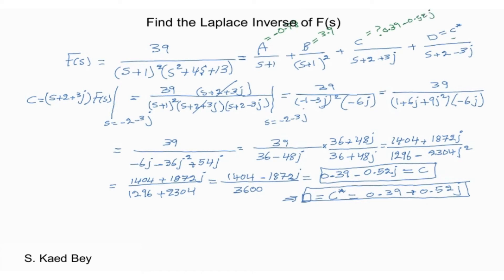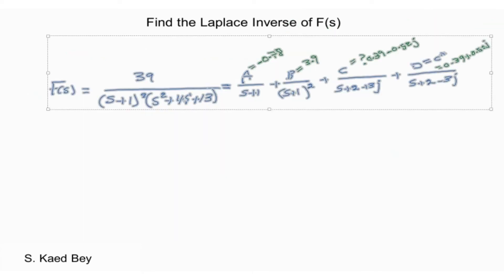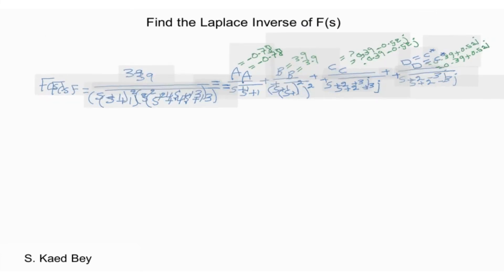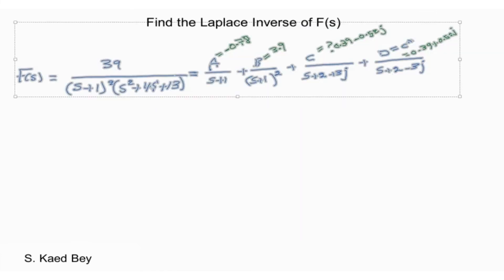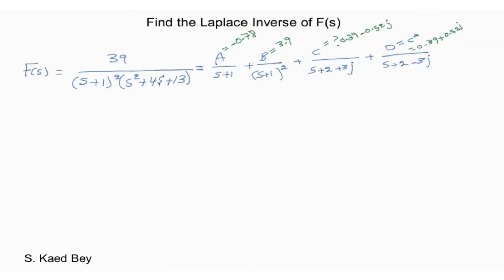Now we have obtained the coefficients A, B, C, and D. We can rewrite the fraction F of S as a sum of simpler fractions. This will allow us to use the Laplace table to find the inverse for our system under study.